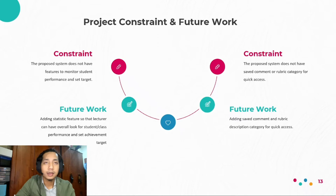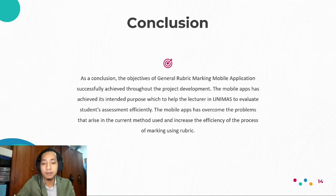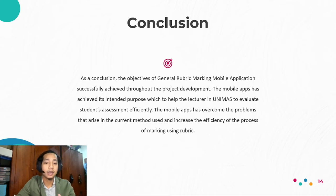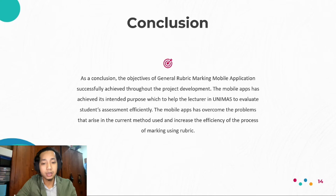As a conclusion, the objective of the General Marking Rubric mobile application was successfully achieved throughout the project development. The mobile app has achieved its intended purpose to help lecturers at Unimas evaluate student assessments efficiently. The mobile app has overcome the problems that arose in the current method used and increased the efficiency of the marking process using rubrics.